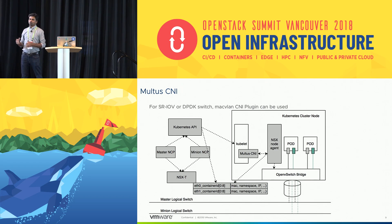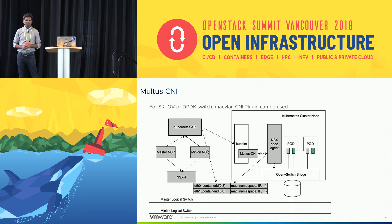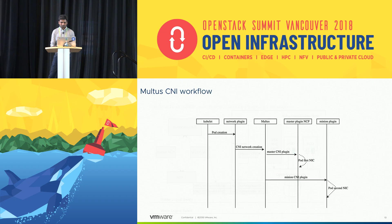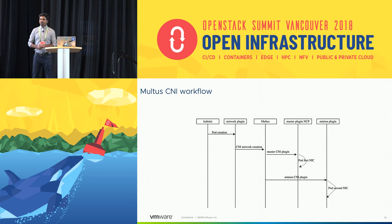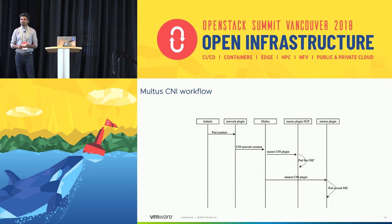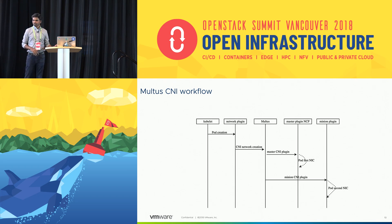The same applies for control plane and user plane separation. The workflow is: whenever Kubelet gets a command to create a pod, it sends control to the network plugin and Multus receives it. It creates the first interface based on the master CNI plugin, then offloads to the second CNI plugin, which creates the additional interfaces.